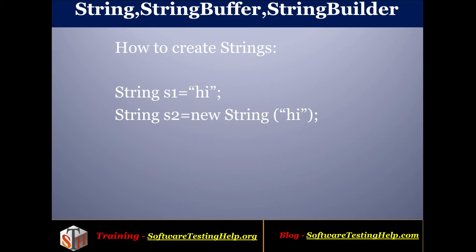We can create a String in two ways. Way one: `String s1 = "hi"` — here we are just assigning the string literal to s1. Way two: `String s2 = new String("hi")` — here we are creating a new String object. In way one, the compiler checks if the word is present in the string pool and directly assigns that reference. In way two, it creates a new String object.